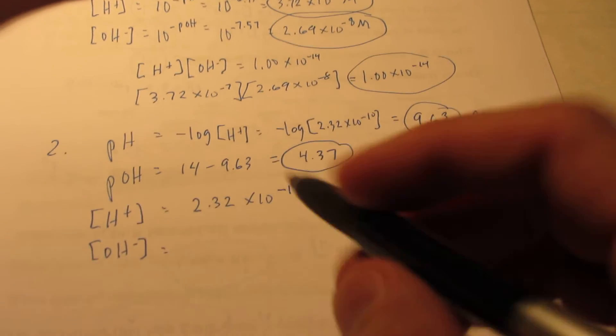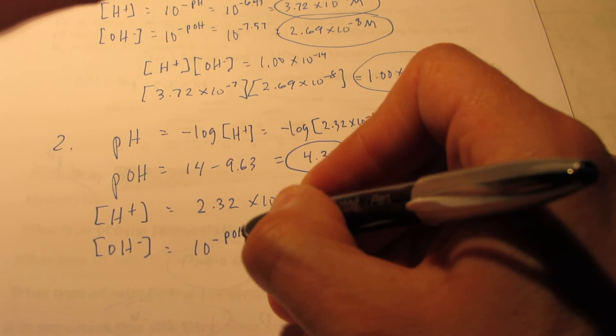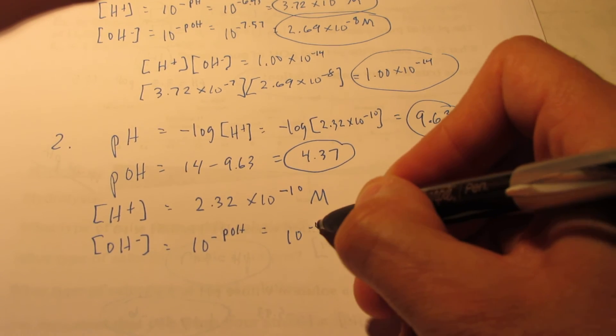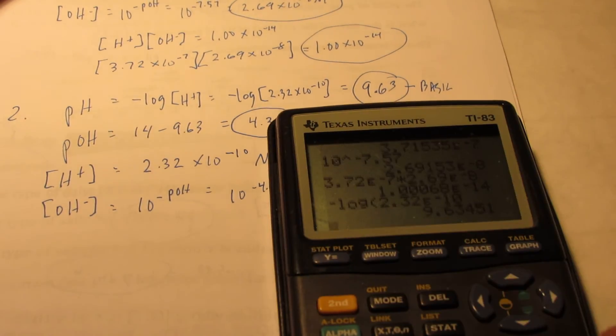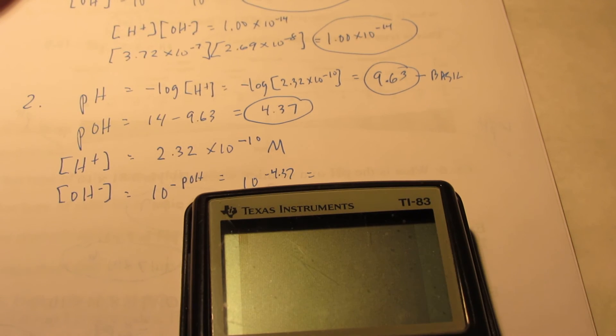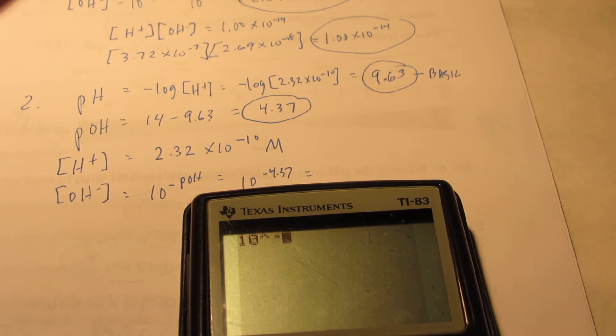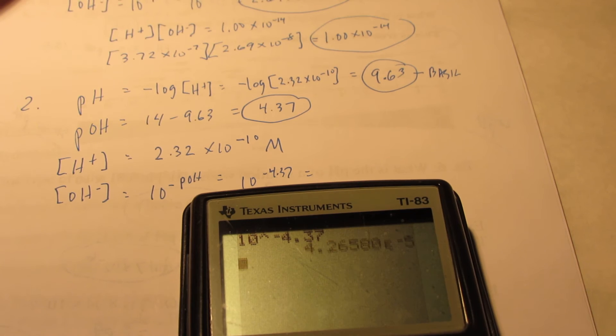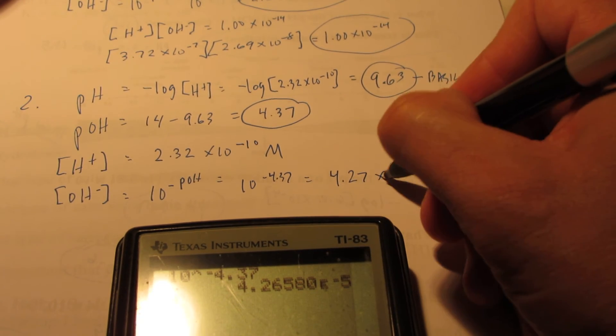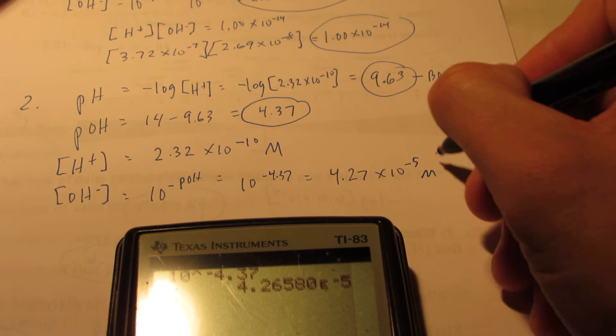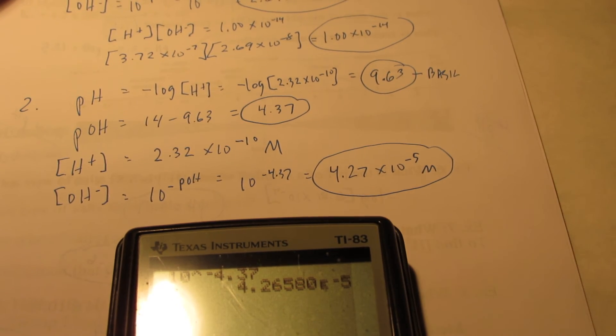And then the OH minus is 10 to the negative pOH, which is 10 to the negative 4.37. So we can check that out. Let's clear this so we can see the top of the calculator. 10 caret key negative 4.37, enter. Looks like we get 4.27 times 10 to the negative 5th molar.